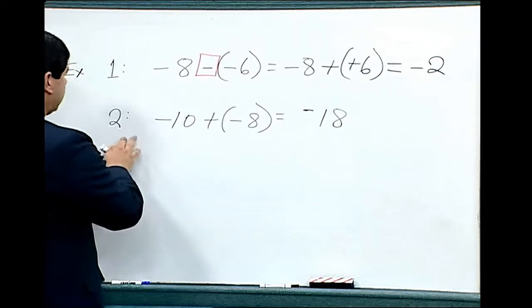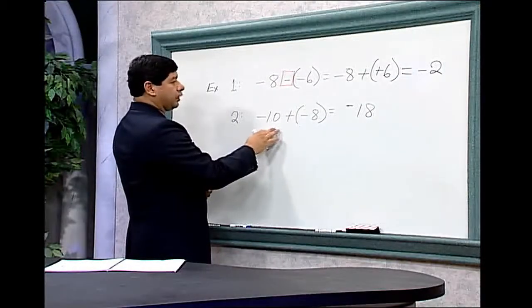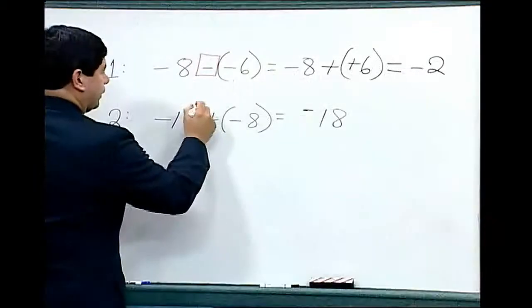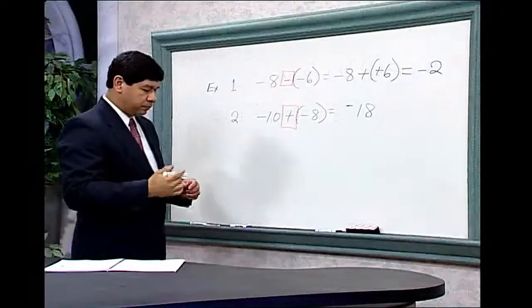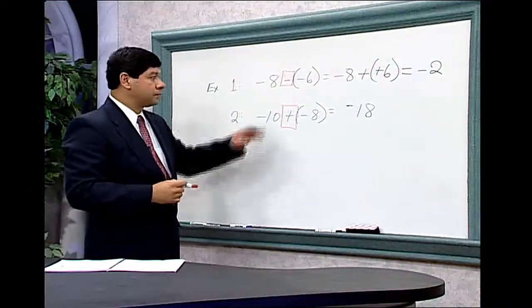Example number two: we have negative ten plus negative eight. Here's our operation symbol that tells us what operation, what process to do to solve these.